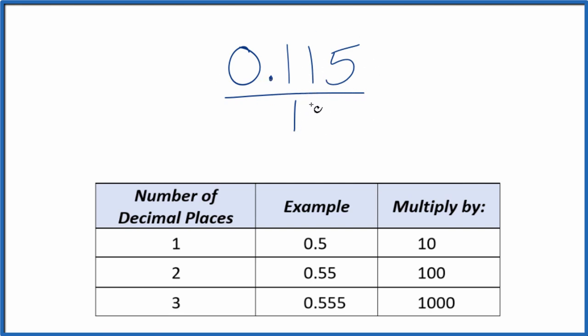So now we have the start of a fraction. I can see I have 1, 2, 3 decimal places. With 3 decimal places, we're going to multiply that by 1,000. So we take 1,000 times 0.115, and that's going to give us a whole number, 115.